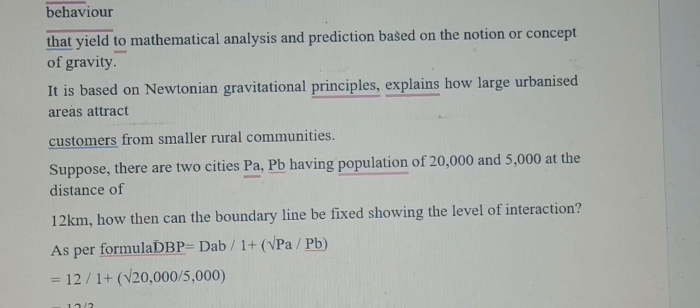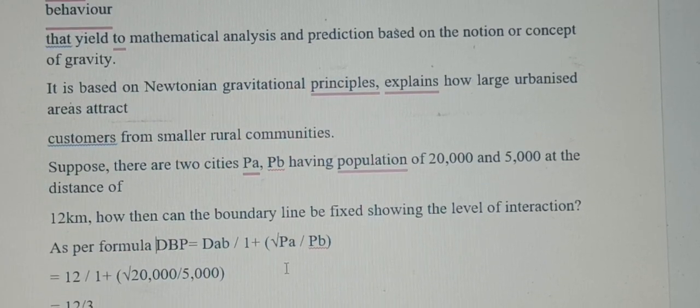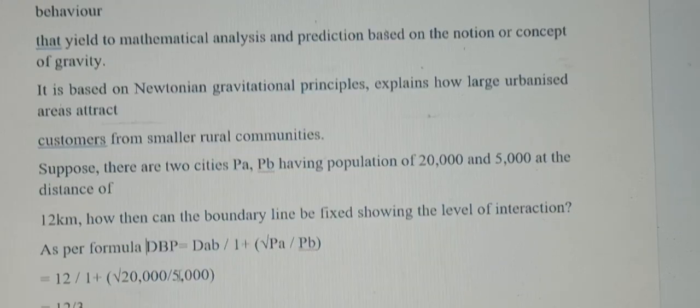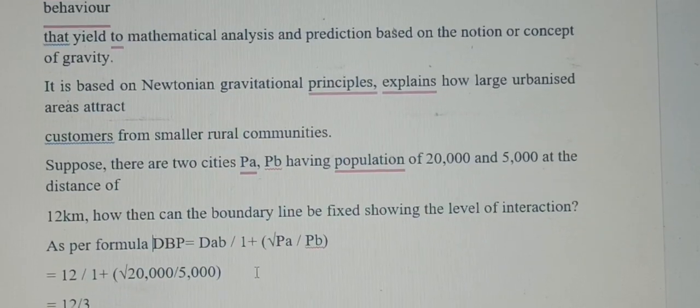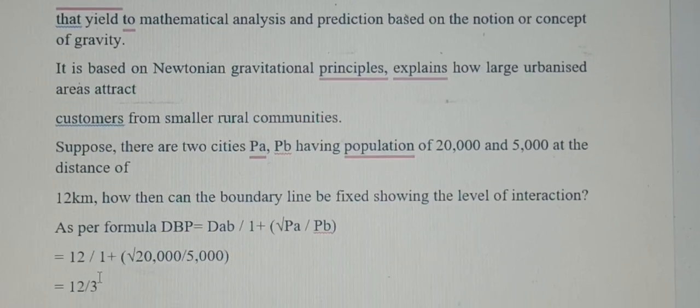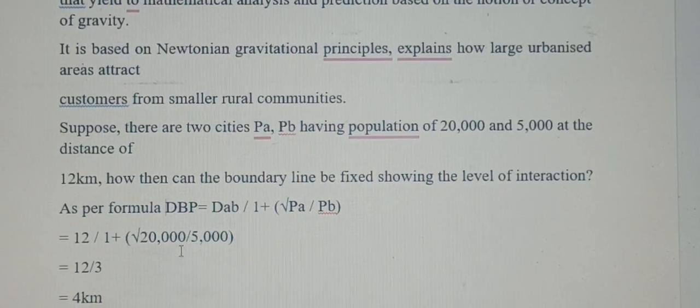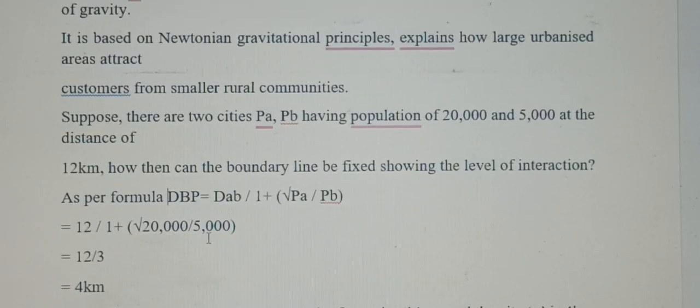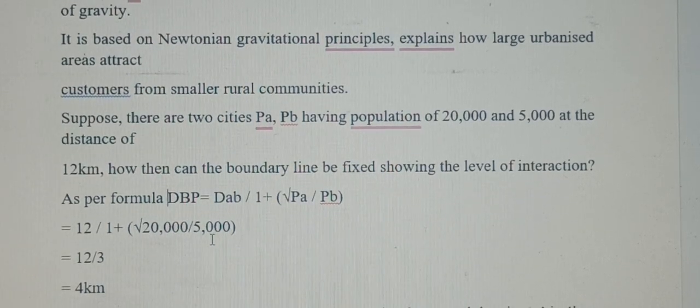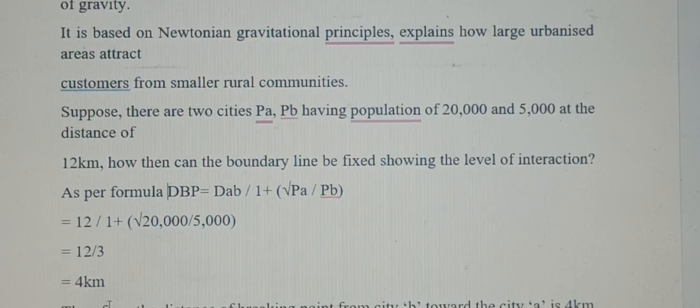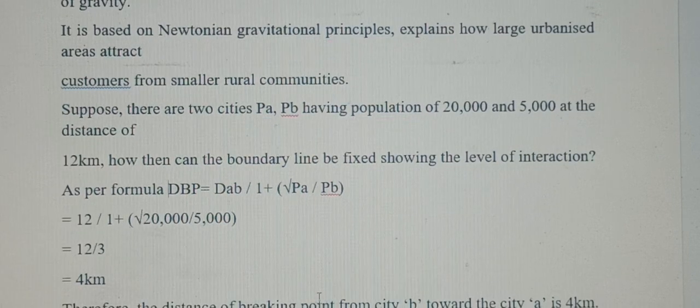As per the formula, DBP = Dab / (1 + √(Pa/Pb)). The distance between the two towns is 12 km, divided by 1 plus the square root of the population of the first town (20,000) divided by the population of the second town (5,000). After calculating, we get 4 km.